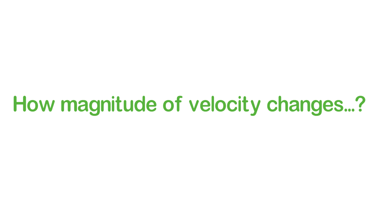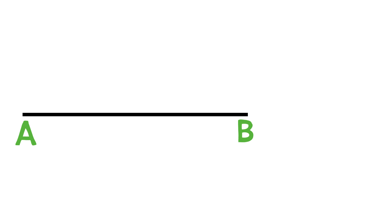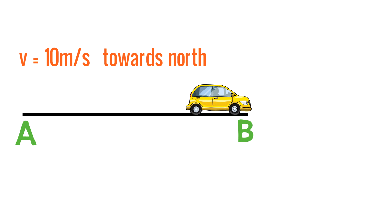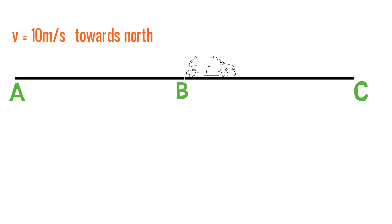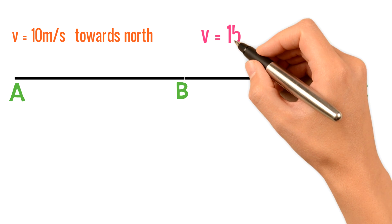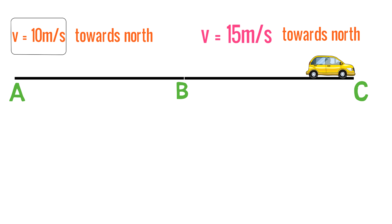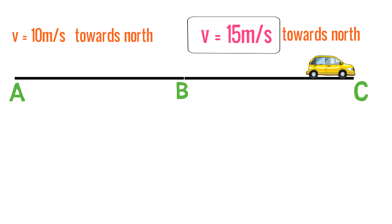This example will clear your concept. Let's consider a point A and a point B, and a car is moving from point A to point B. The velocity of the car from A to B is 10 meters per second towards north. Now, if the car is moving from B to C, its velocity is 15 meters per second towards north. So the velocity changed from 10 to 15 meters per second.